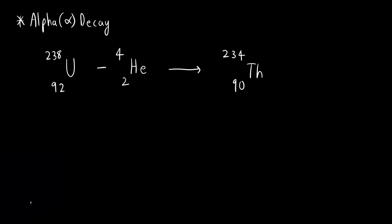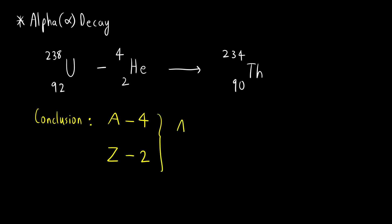The conclusion for alpha decay: whenever you remove one alpha particle, the atomic mass number A decreases by 4 units and the atomic number Z decreases by 2 units. This is very important. If there are multiple alpha particles lost, you subtract accordingly for each one.